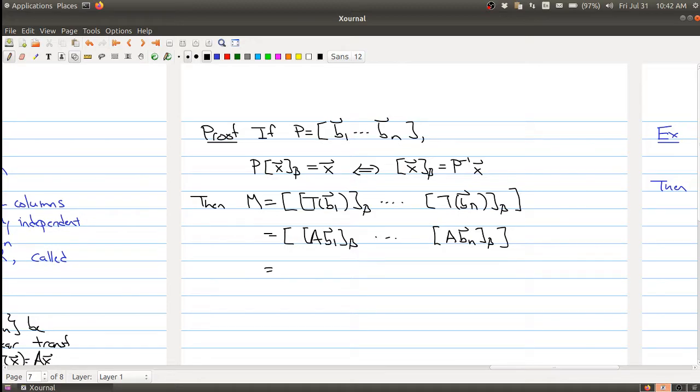So AB1 is the B coordinate. We're looking for the B coordinate, so I'm going to use this factor right here. So I can replace this with P inverse AB1 all the way through with P inverse ABN. So I'm using this factor right there to do this result.